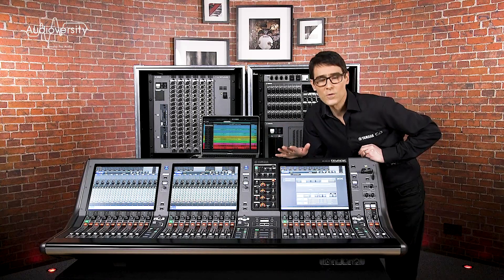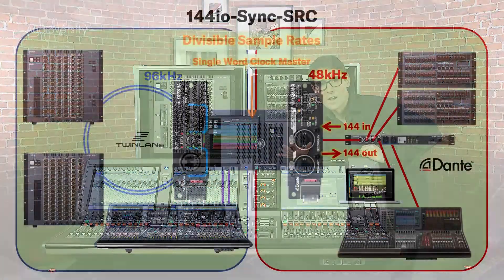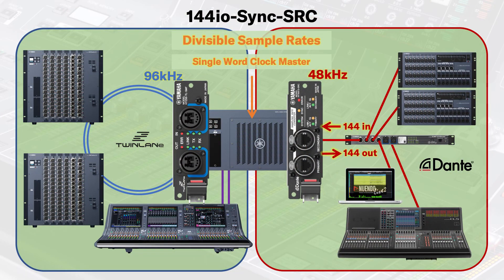This mode could also be used in a live sound system if, for example, there's a PM5 at front of house and a CL5 at monitors. Again, the Dante network could run at 48 kHz while RIVAGE runs at 96 kHz, so long as RIVAGE is the clock master for the whole system.